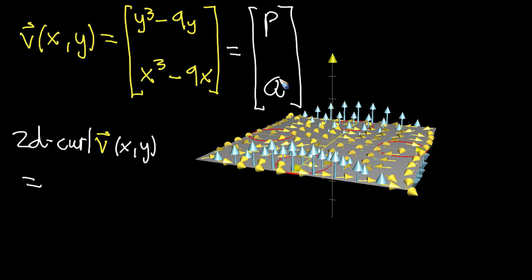...what it equals is the partial derivative of that second component with respect to x. So the partial of q with respect to x minus the partial derivative of that first component with respect to y. So minus partial of p with respect to y.